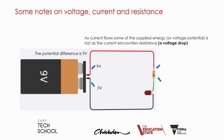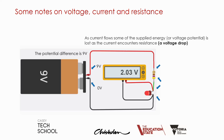For example, there will be a voltage drop across the resistor as it's offering resistance, and also across the LED. In truth there will be tiny voltage drops across the wires and even the battery, as it has tiny internal resistance. Looking at our circuit, we've just measured the voltage across the LED, which means the voltage drop across the LED is 2.03 volts.